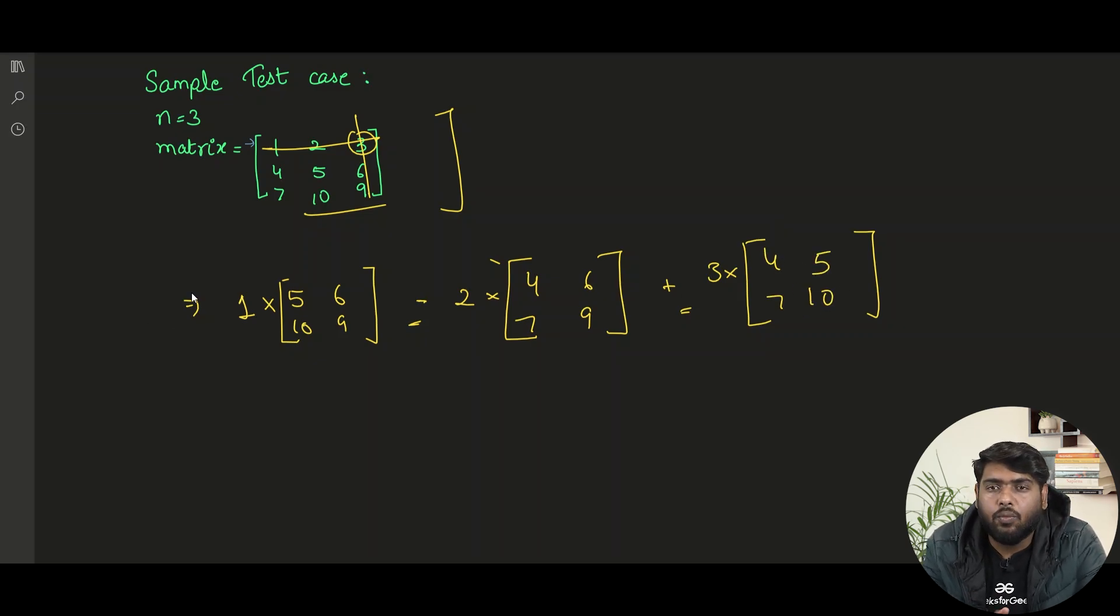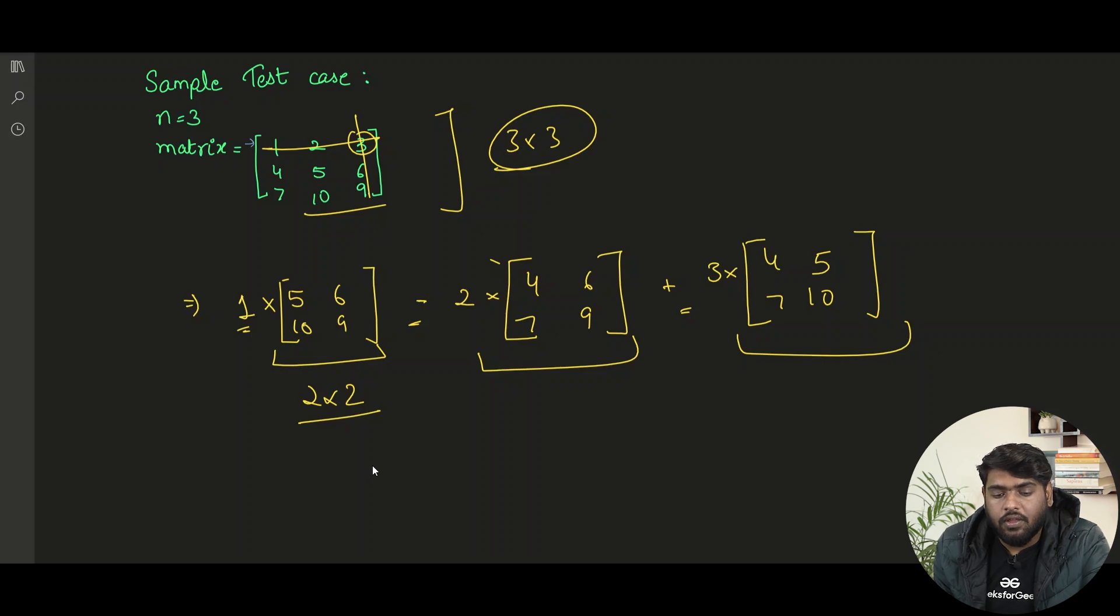And now how do we find cofactors? When we are taking 1, we have to cancel the row and the column. All the values that are left, we need to compose the matrix out of it. So, for this one, it is going to be 5, 6, 10 and 9. Similarly, if we see for 2, this row in which 2 is and the column are going to be cancelled.